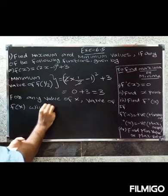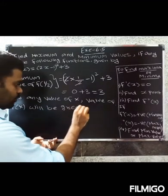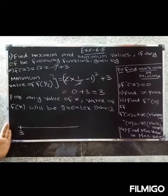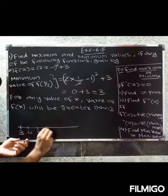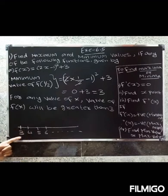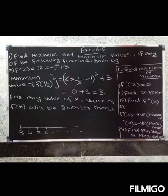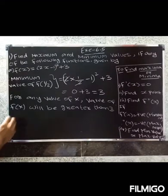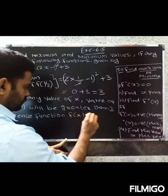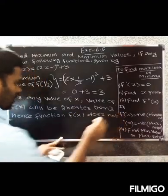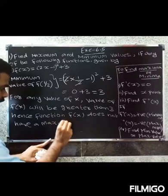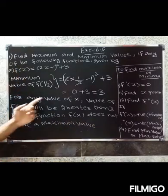For any value of x, f(x) will be greater than or equal to 3. The minimum value is 3. Looking at the graph, the function goes up continuously from this minimum, so the minimum value of f(x) is 3. Hence, the function f(x) does not have a maximum value.